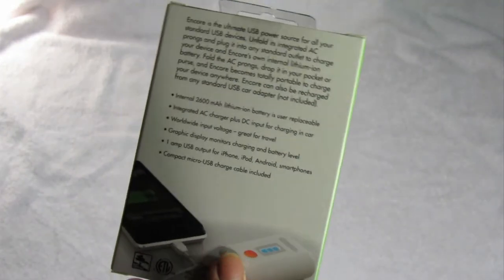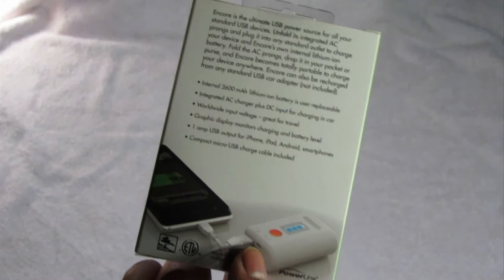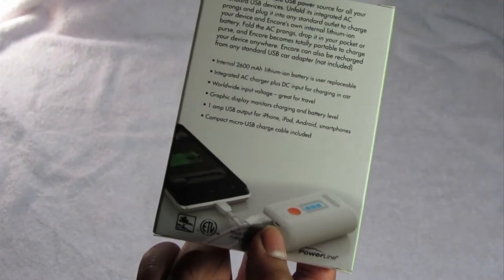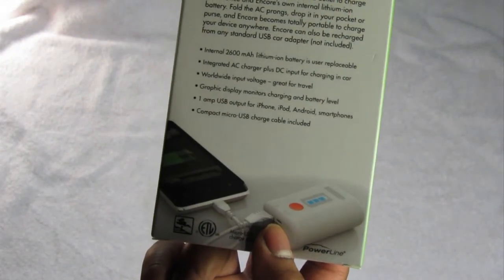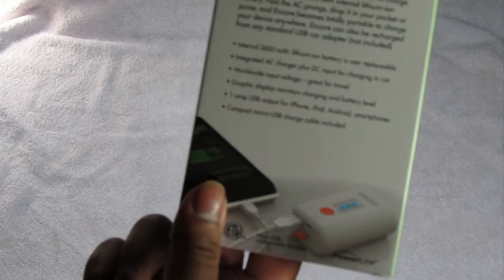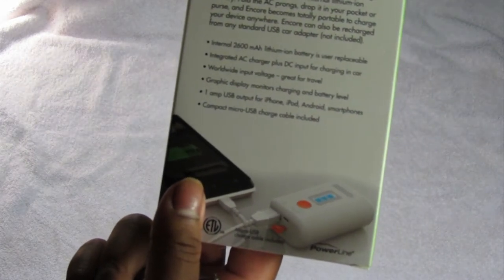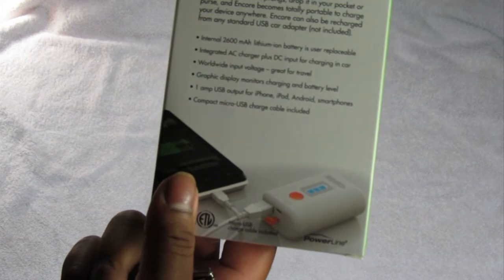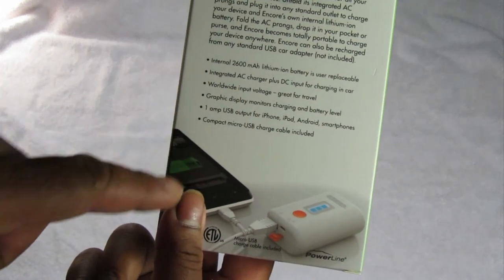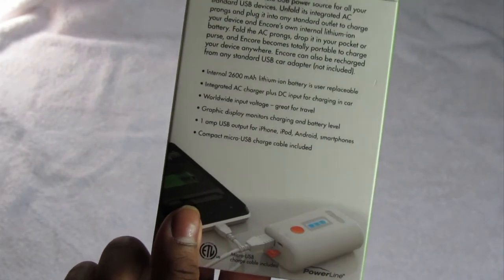It has an AC charger plus DC charger. That's just the power plug that I was speaking of earlier, which means you can use this just like any other wall charger. Then once it is unplugged, it will continue charging until the battery goes out. It has worldwide input voltage, so I'm guessing that will work with Europe's input voltage of 230 or 240 volts. You have a graphic display monitor that shows charging and battery level. And then again, the 1-amp USB output for charging smartphones, and the compact micro USB charging cable, which is included.